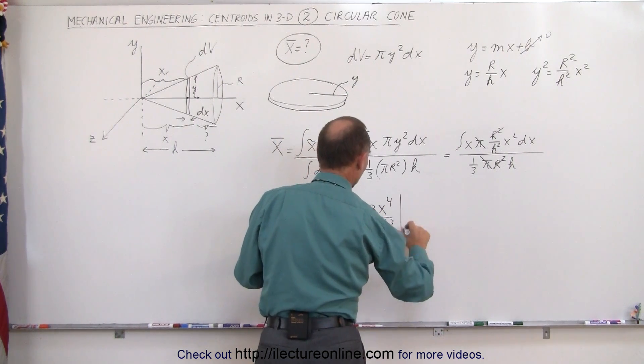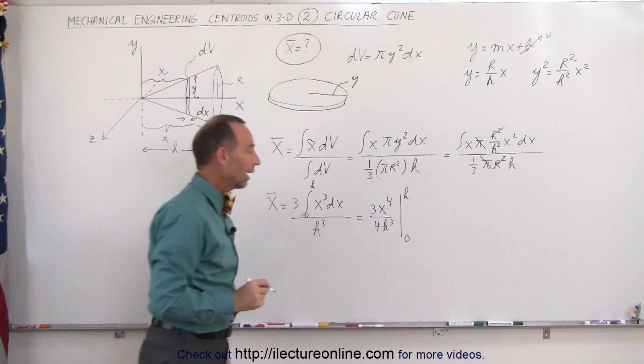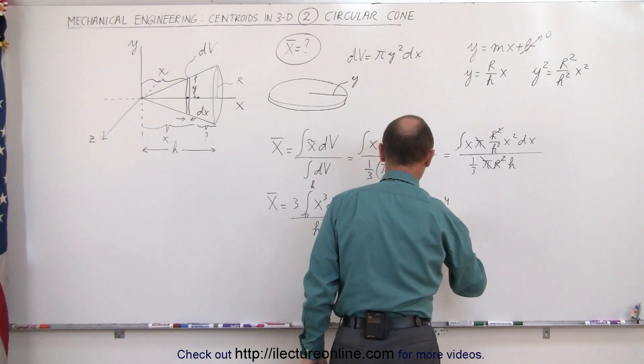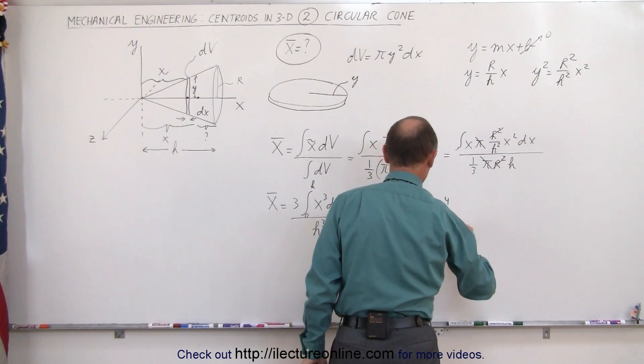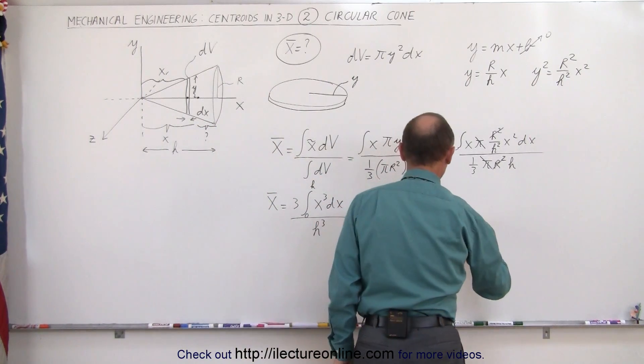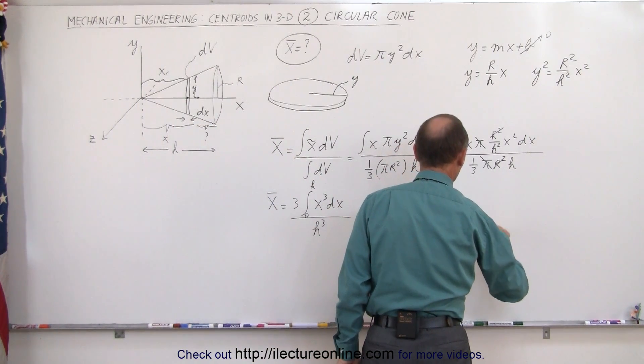Now all we have to do is plug in h over here, and this becomes 3h to the 4th divided by 4h³. When we plug in 0, we get 0, so we don't have to worry about that. And this simplifies to 3 fourths h.